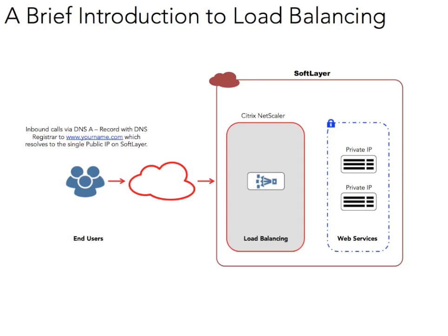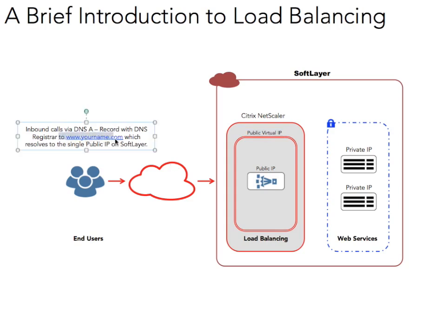This is where the Netscaler comes in. By putting in the Netscaler, we can now load balance the traffic coming in. Our Netscaler will have a public virtual IP, which is the IP of the service. So this DNS record will resolve to the service IP address. And the service IP address will allow you to traverse through the public side of the VPX into the private networks.